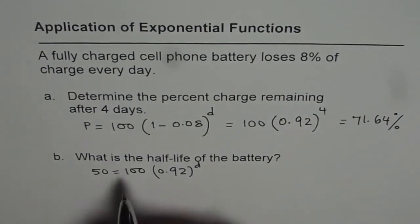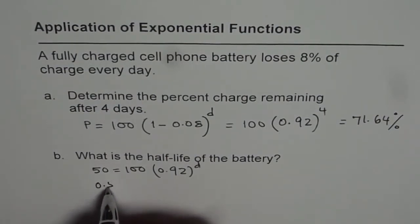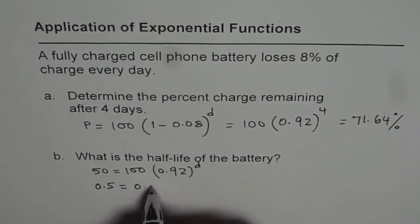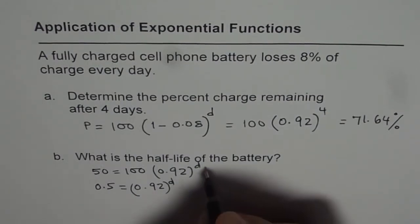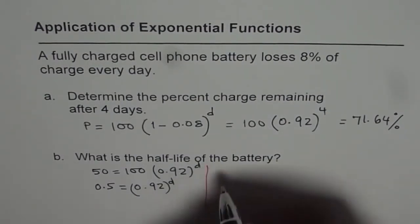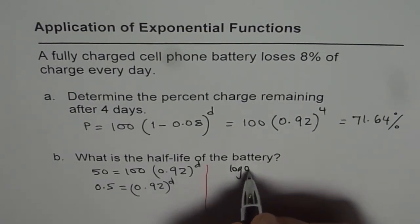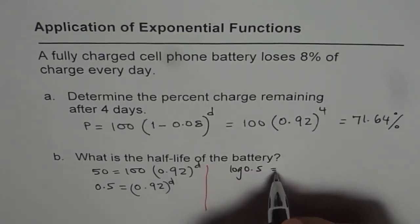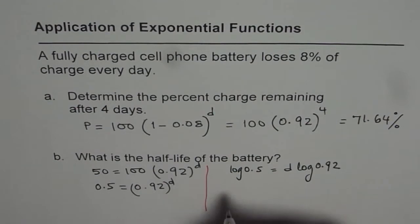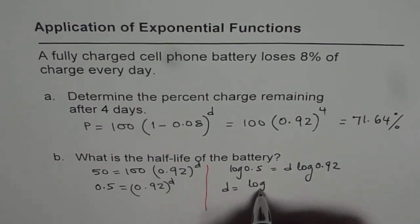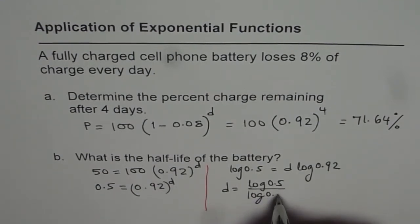50 divided by 100 will give us 0.5 equals to 0.92 to the power of D. To find D, we can take log both sides. We get log of 0.5 equals to D times log of 0.92. And therefore, we get D equals to log of 0.5 divided by log of 0.92.